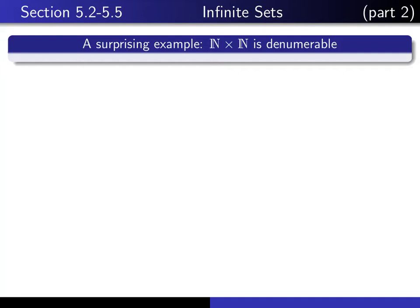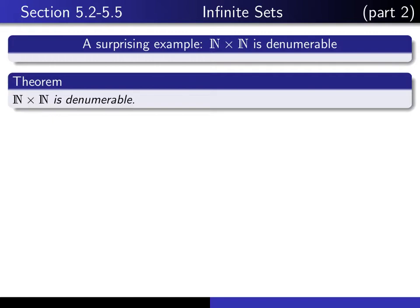This is part two in our series of lectures on infinite sets. In this lecture we're going to consider a surprising example. We're going to show that the Cartesian product n cross n is a denumerable set. So here's the theorem: n cross n is denumerable.